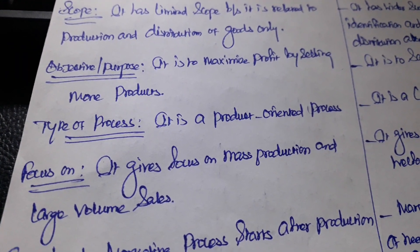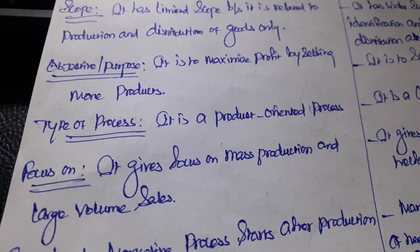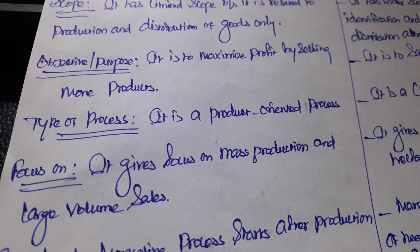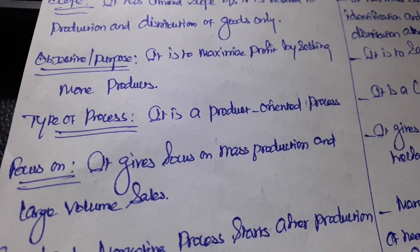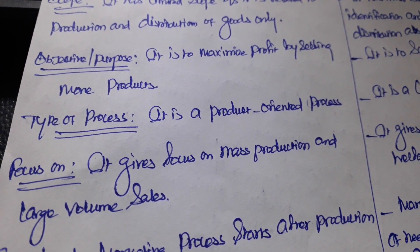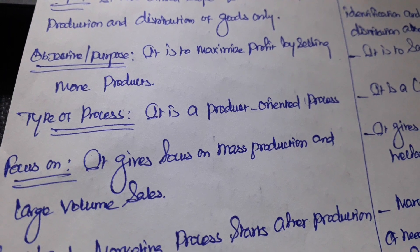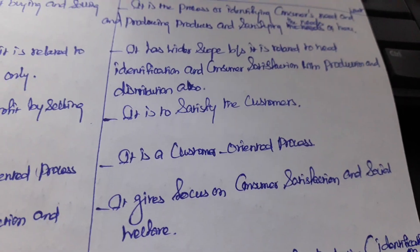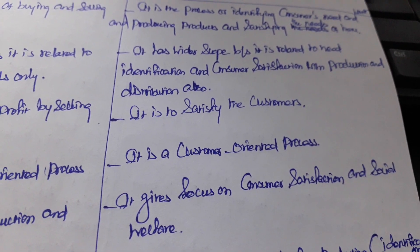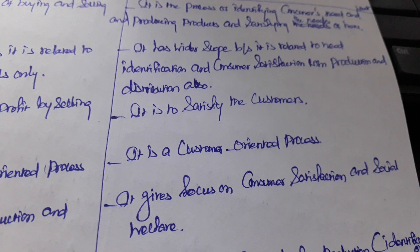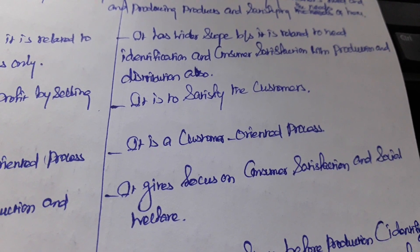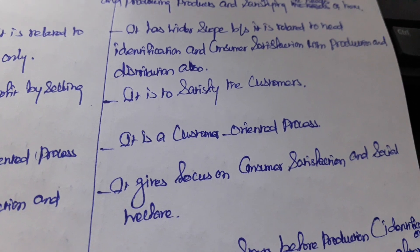The objective and purpose of the old concept of marketing is to maximize profit by selling more products — its purpose is to earn more. The new concept of marketing aims to satisfy the consumer; its purpose is to fulfill consumer satisfaction.